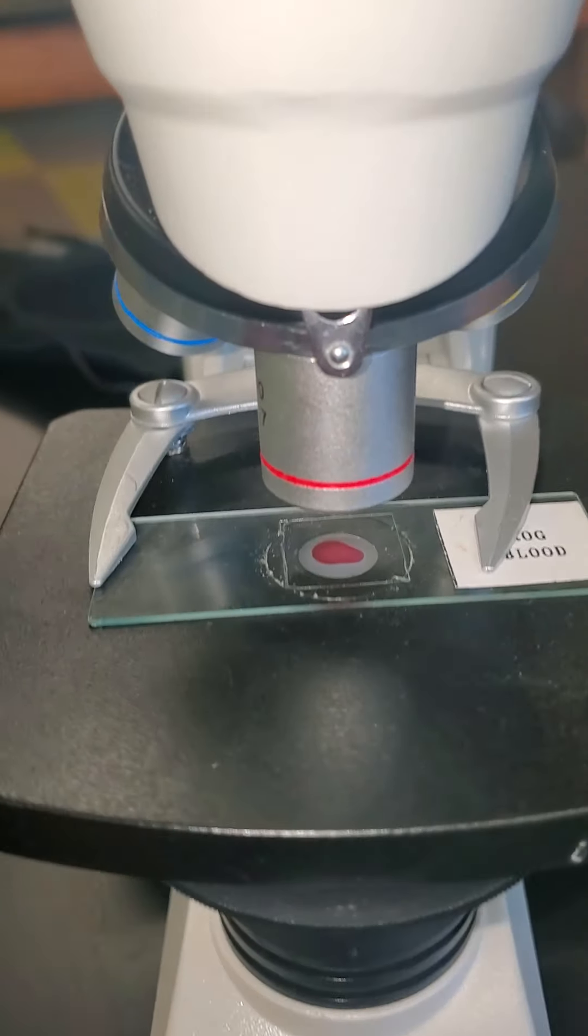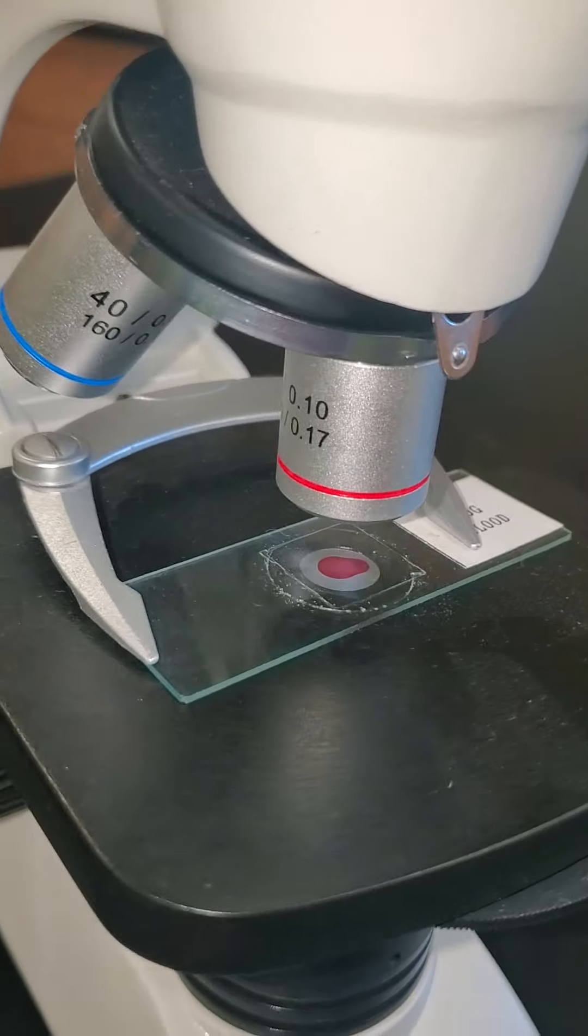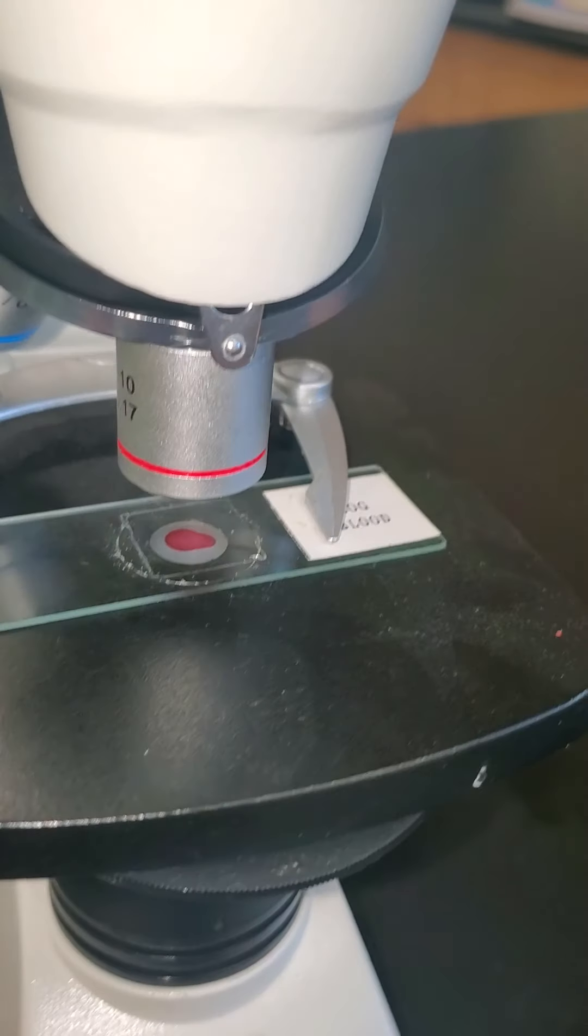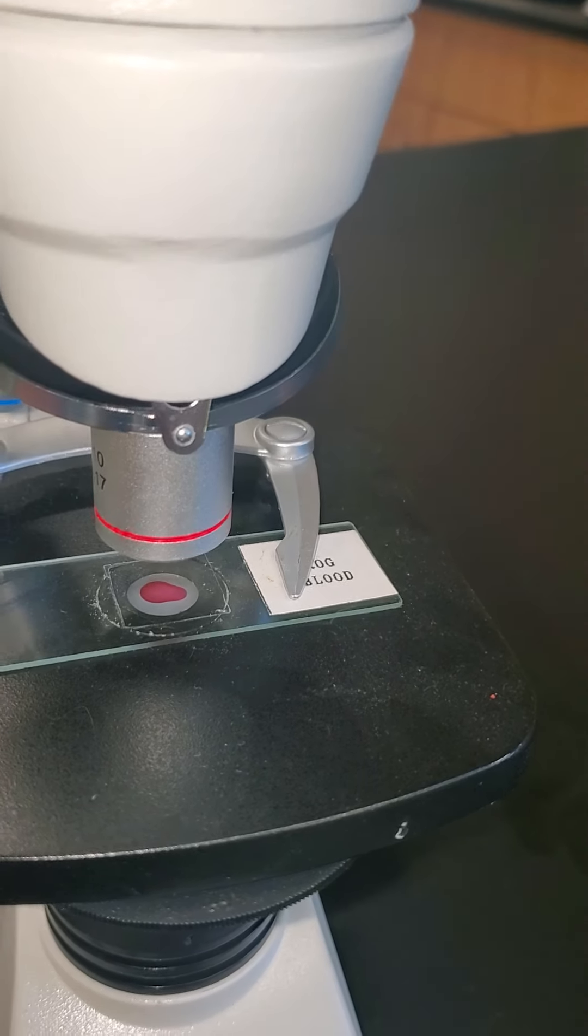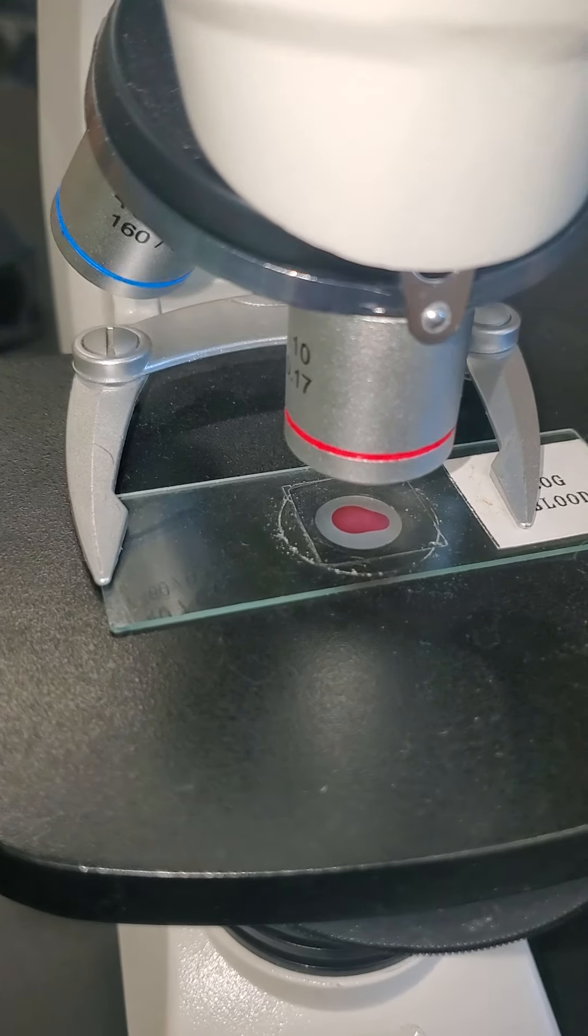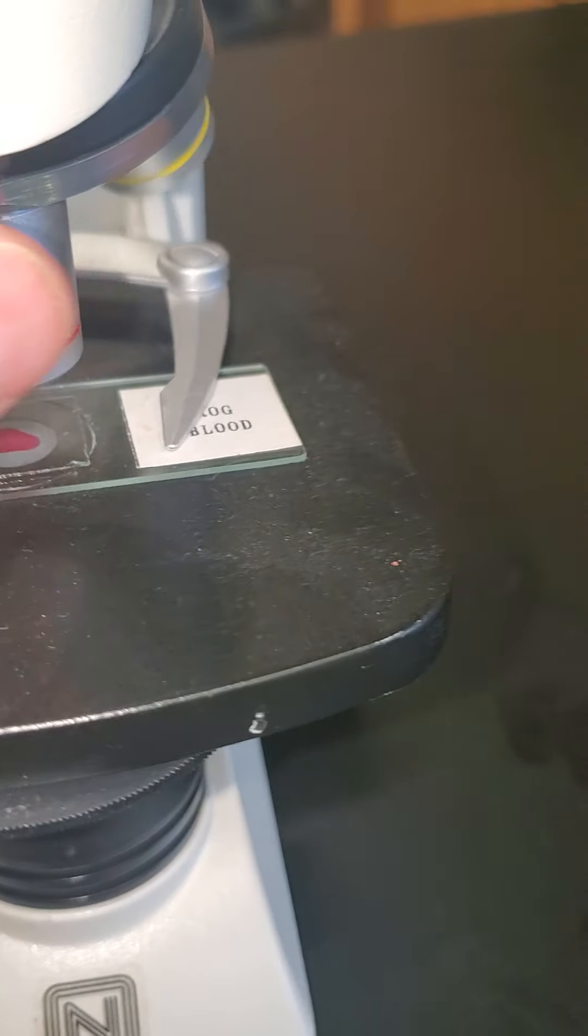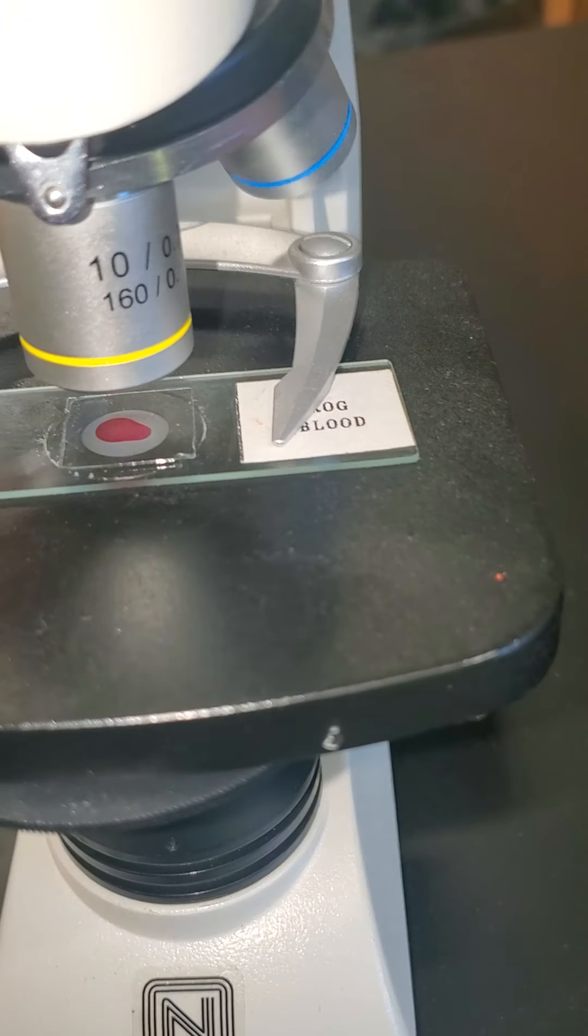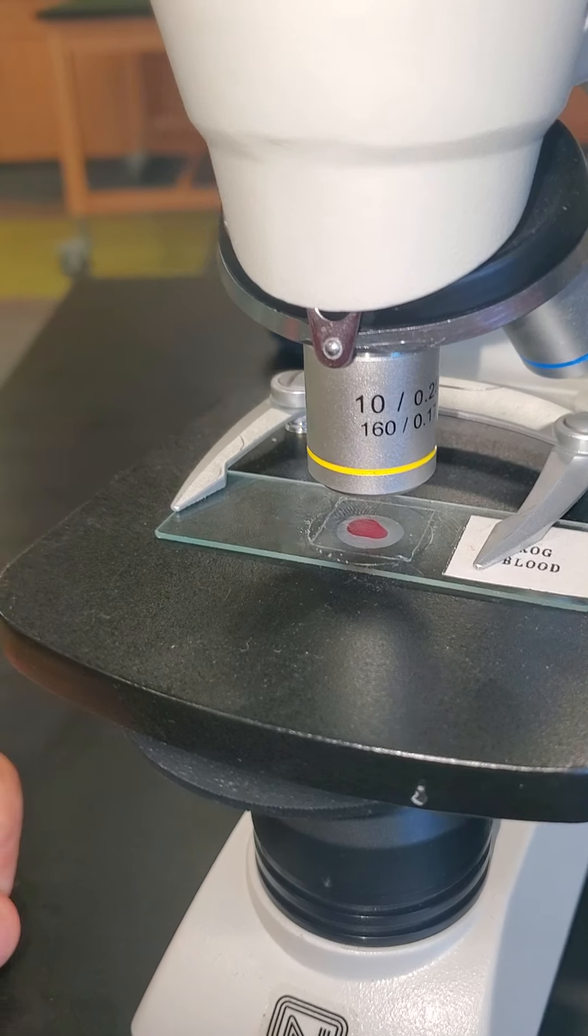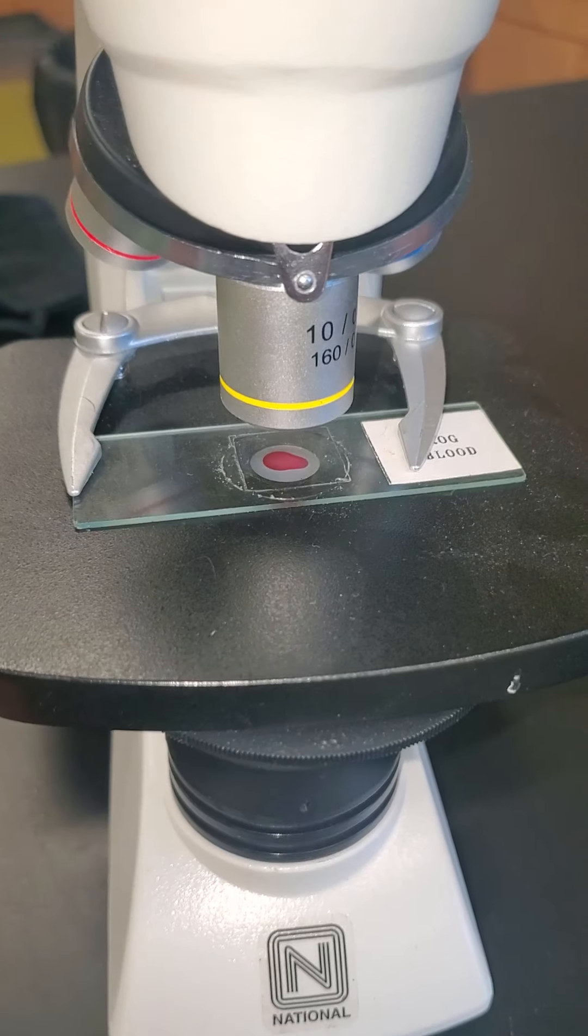At that point I always start with the red four times magnification lens so that we can see that our image is centered in the lens. Once we get a good view of that, we can up the ante a little bit with a more powerful lens and get a good view of what we are looking at.